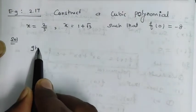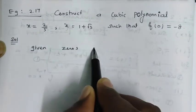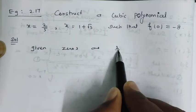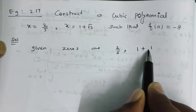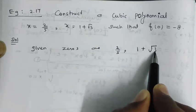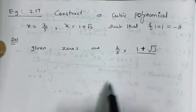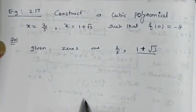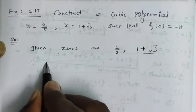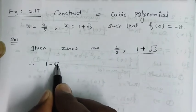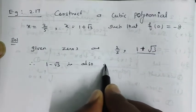The given zeros are x equal to 2/5 and x equal to 1 plus root 3. Since 1 plus root 3 is an irrational root, by the conjugate root theorem, 1 minus root 3 is also a zero.